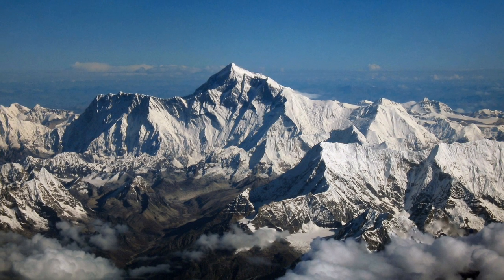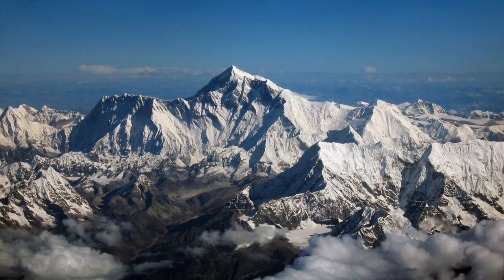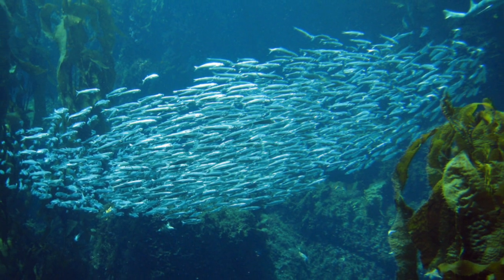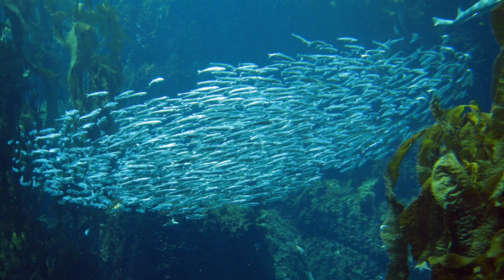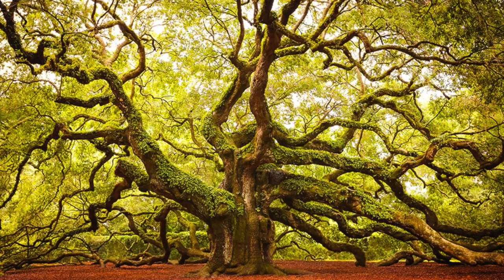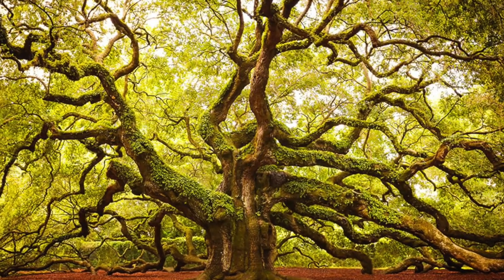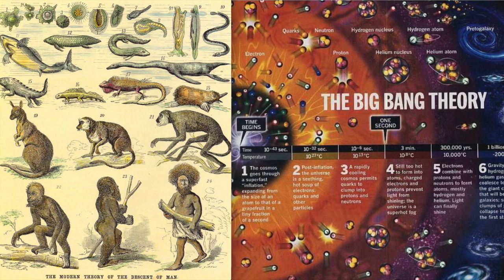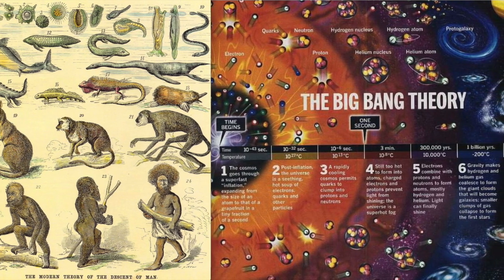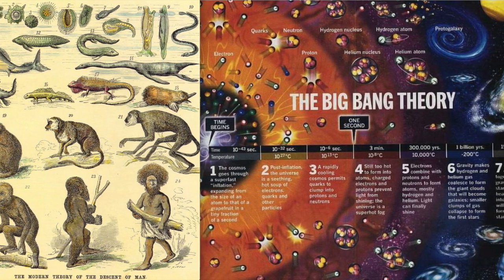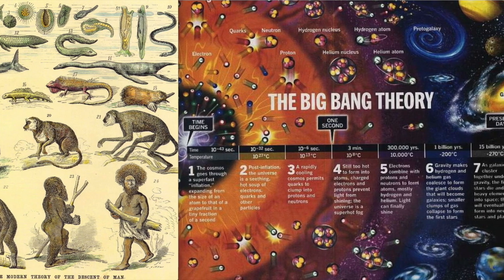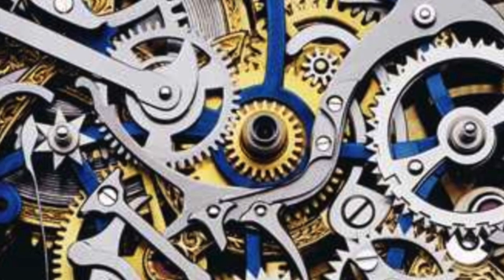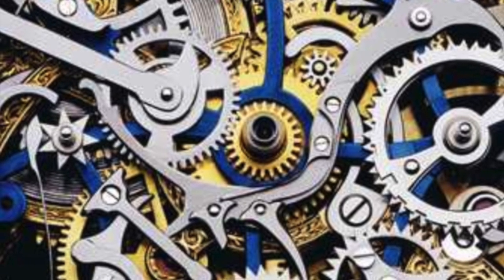For many decades, people had believed, mostly in the Western world, that the Earth and all life in it were created by a series of natural processes that were easily explained. The belief had been that the scientific theories of evolution and the Big Bang Theory provided a sufficient explanation for the existence of life, matter, and energy. Belief in these theories required simple logic, reason, and observation of evidence. On the other hand, intelligent design theories required essentially blind faith.